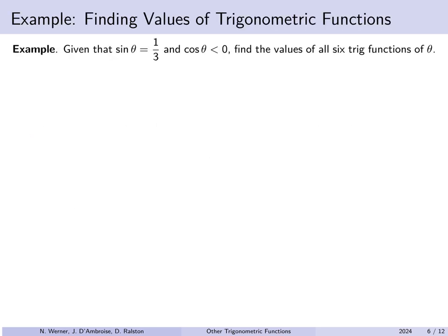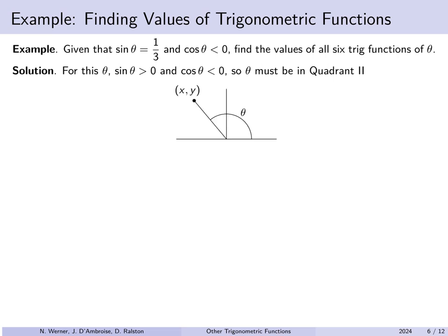Given that the sine of theta happens to be 1/3 and the cosine of theta is negative, can we find the value of all six trigonometric functions? For this particular angle, we know sine of theta is positive — it's 1/3 — and cosine is negative. In which quadrant is the y-coordinate positive but the x-coordinate negative? Positive y and negative x puts you in quadrant 2. So we're somewhere in quadrant 2, pointing to a point x comma y, and we know the y-coordinate is 1/3. What we need to find first is the x-coordinate.